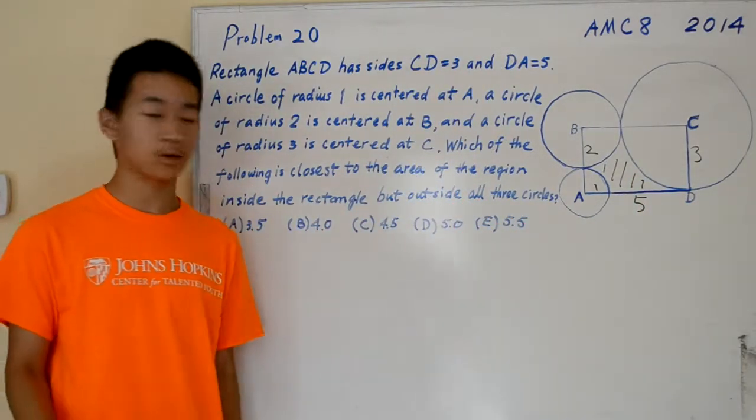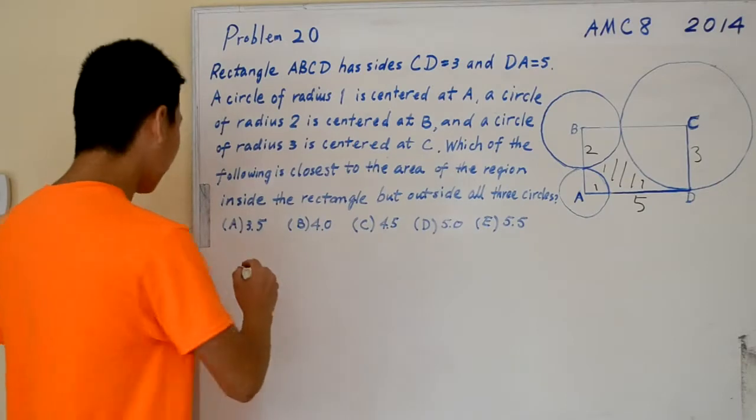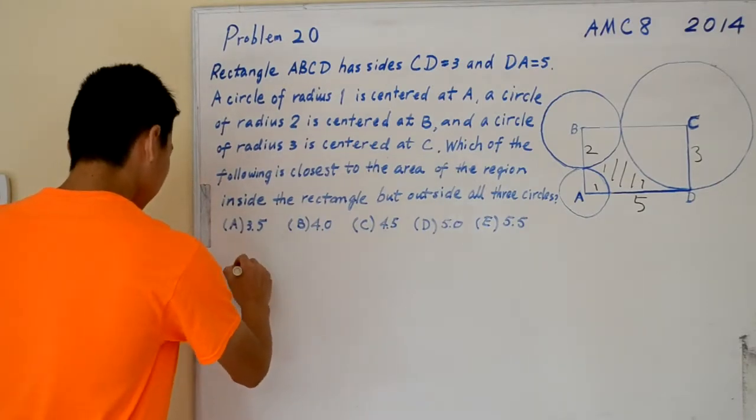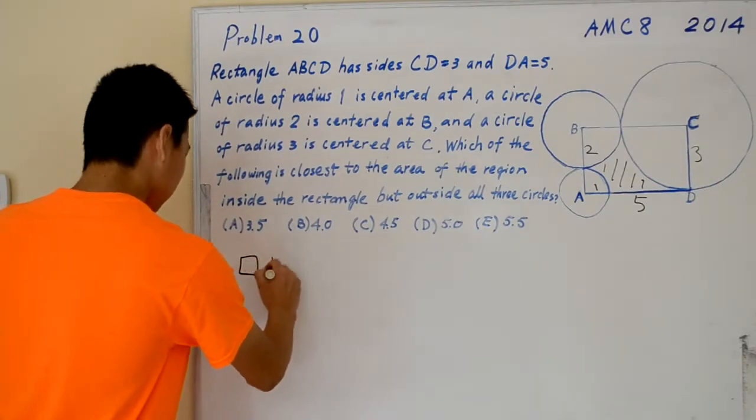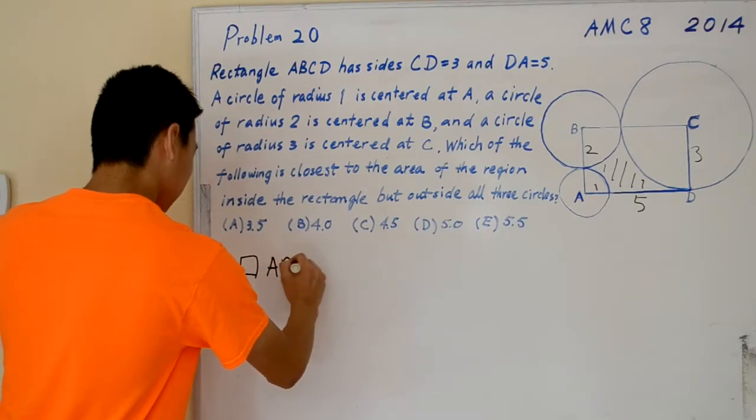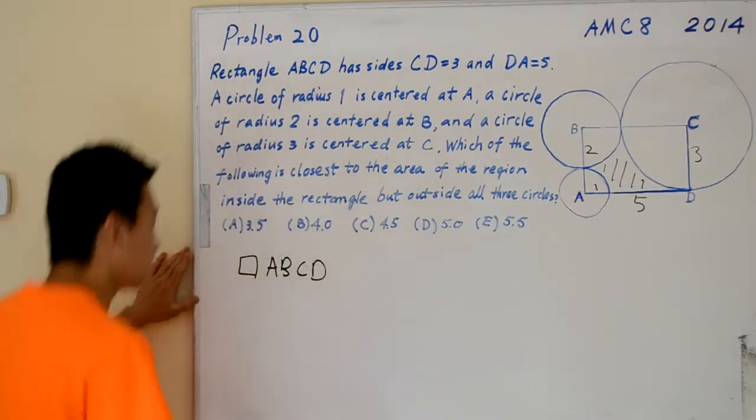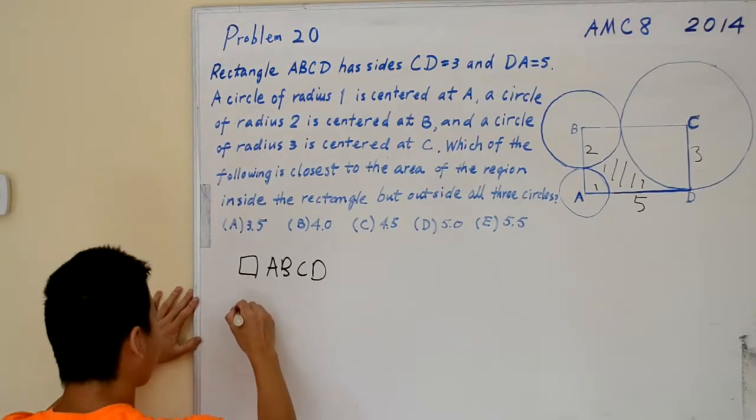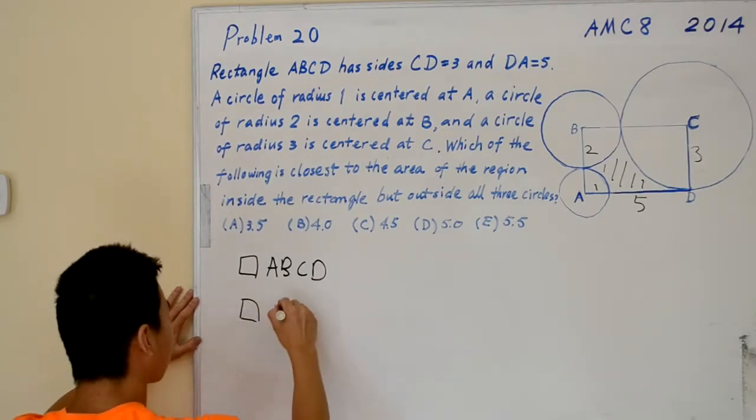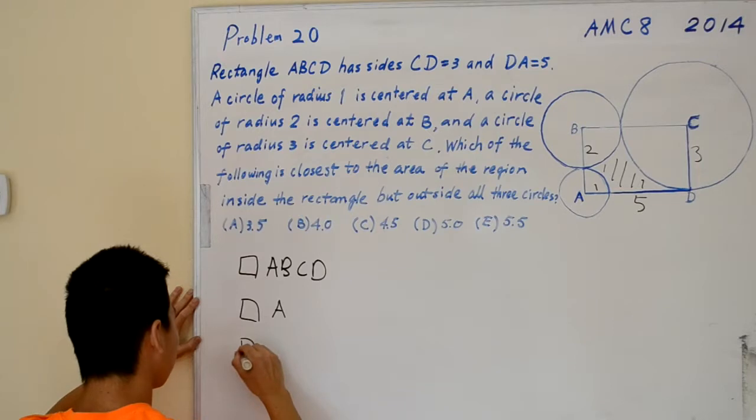In order to find that, we need to find the area of ABCD and then subtract from it the areas of quarter circle A, quarter circle B, and quarter circle C.